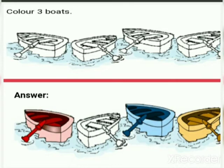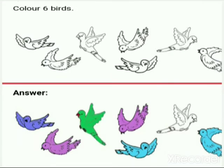Color two trees: one, two. Color two trees. Color three boards. Let us count three boards: one, two, three. Color three boards. Color six birds. Count six birds and then color six birds.